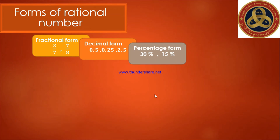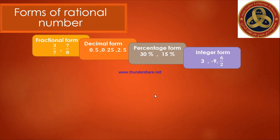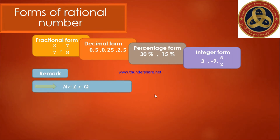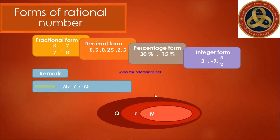The fourth form is the integral form, meaning a whole number. A whole number is a rational number, for example three as a positive number, negative nine as a negative number, and six over two as a whole number because six divided by two equals three. Very importantly: N is a subset of Z, and Z is a subset of Q, which means natural numbers are integers and integers are rational numbers.